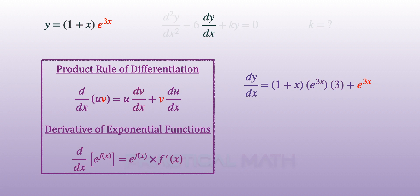We'll continue with the product rule, where we copy down v, which is e to the power of 3x, and we'll differentiate u. In this case, differentiate 1 plus x will give us 1.